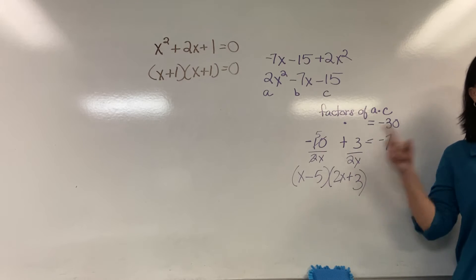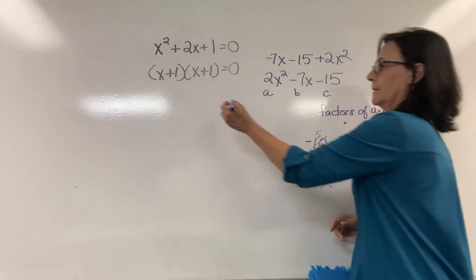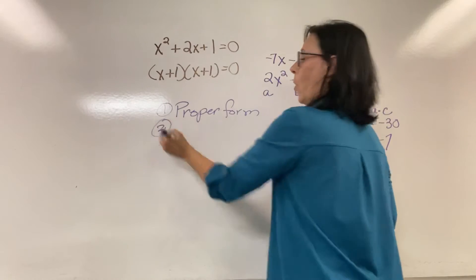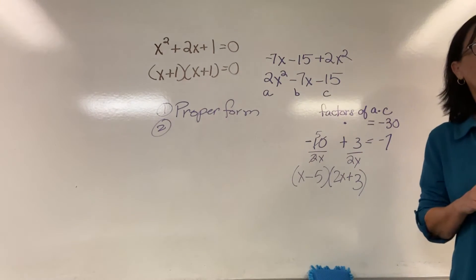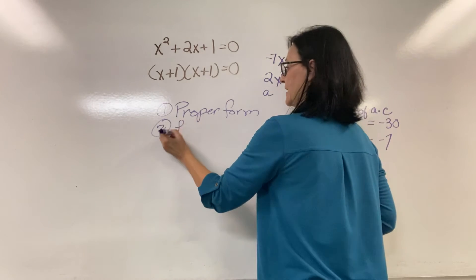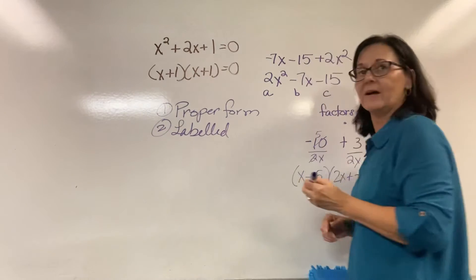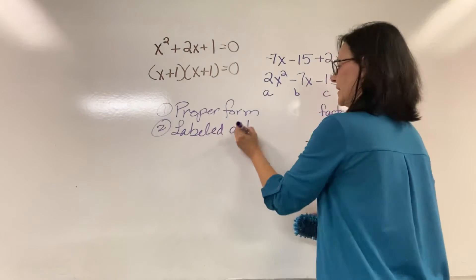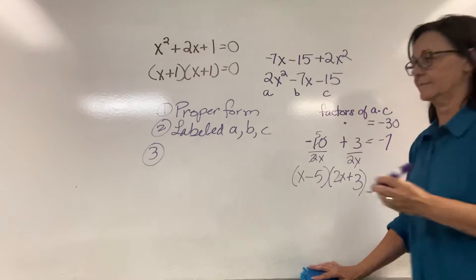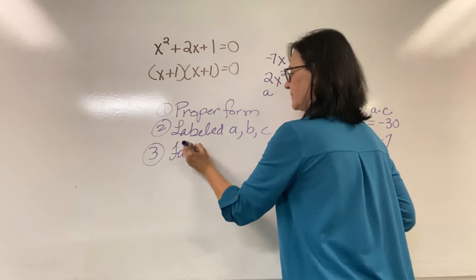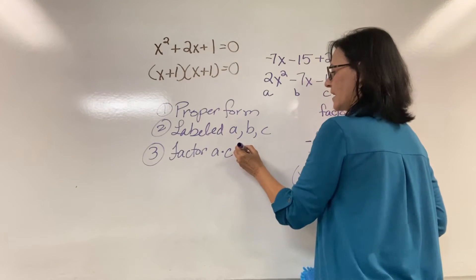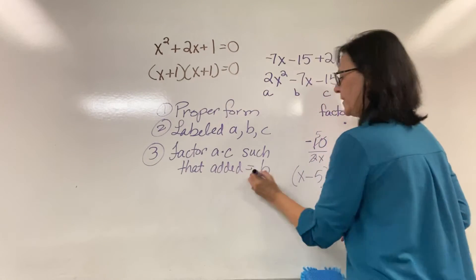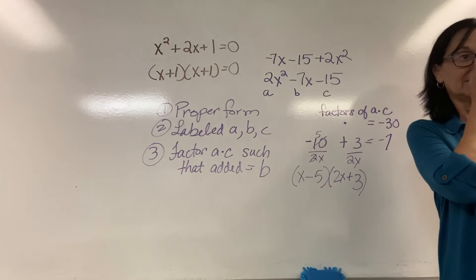Did you write down the process? What's the first thing we did? Put it in proper form. What did we do next? We labeled a, b, and c. What did we do next? We found the factors of a times c such that they equaled the b value.